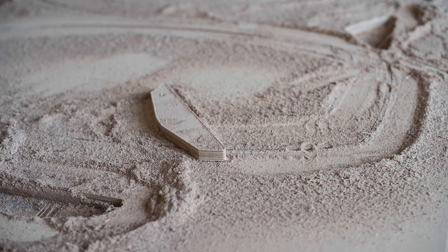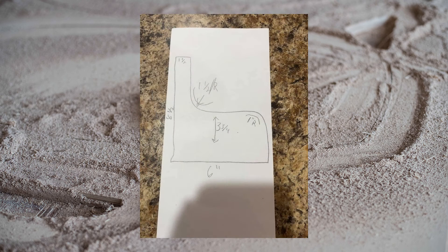Hi everyone. Earlier today I was looking at a Facebook post by Trey Jones. He had this relatively simple shape and he just couldn't figure out how to draw this in Carbide Create. I thought this would make a good example project to take a look at some of the features in Carbide Create that a lot of new users miss.